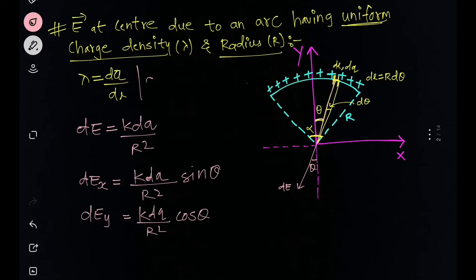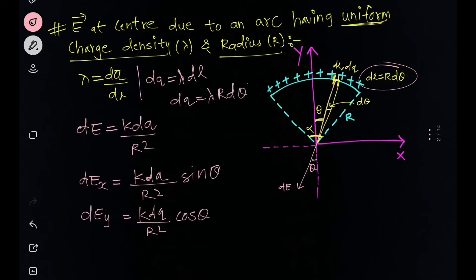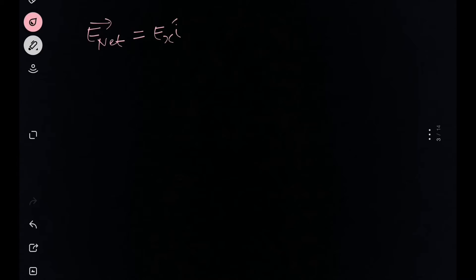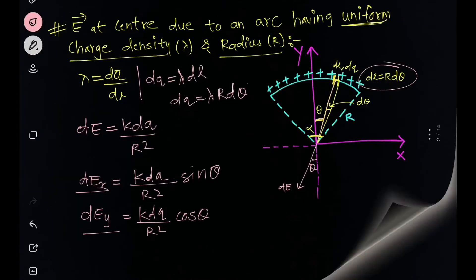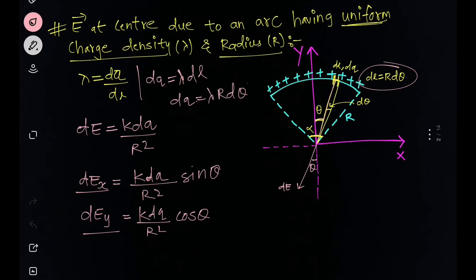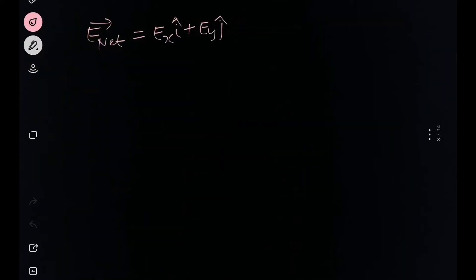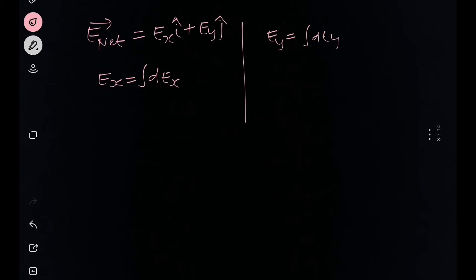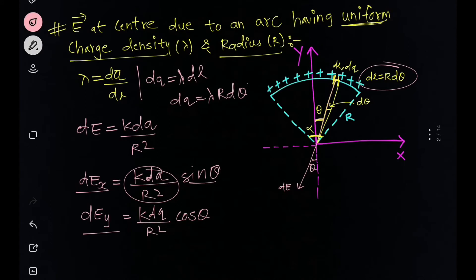The y-component is dEy = k·dq/r²·cos(θ). Now we substitute dq = λ·dl and dl = r·dθ, giving dq = λ·r·dθ. The net electric field has components Ex and Ey, and since the arc is in the XY plane we write E_net = Ex·î + Ey·ĵ. We solve for each axis separately: Ex = ∫dEx and Ey = ∫dEy.